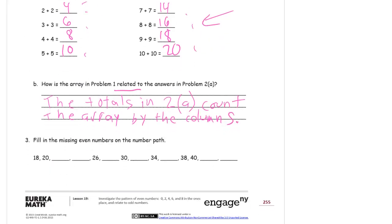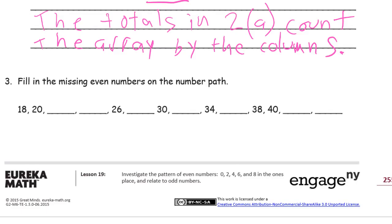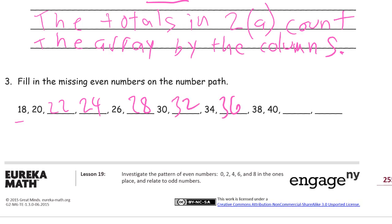Fill in the missing even numbers on the number path. So we're counting by 2s. But this time, usually we're not starting from 2, we're starting from 18. So 18, 20, 22. And if you're not sure what comes next, just add 2 more. 22 plus 2 more, 24. Or you're skipping every other number. Skipping 25 and writing 26. Skipping 27 and writing 28. 30, 32, 34, 36, 38, 40, 42, 44.